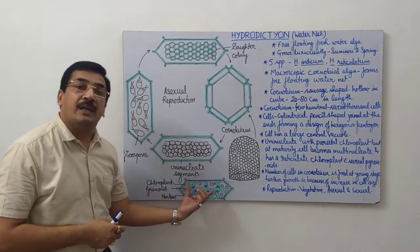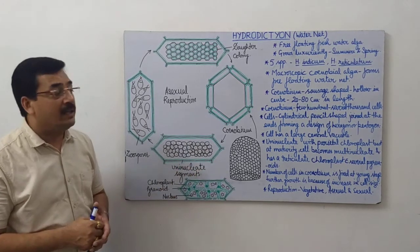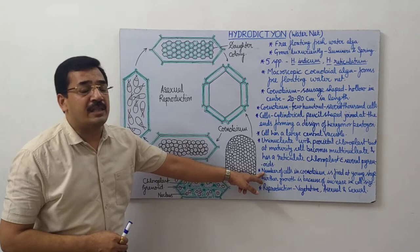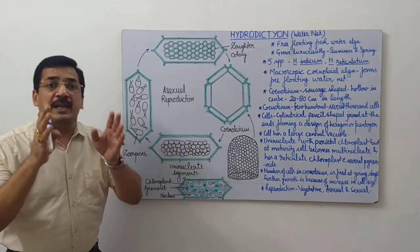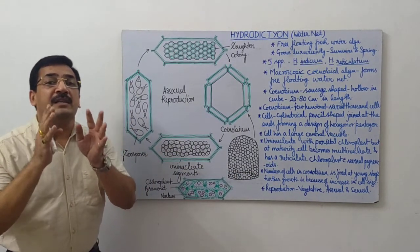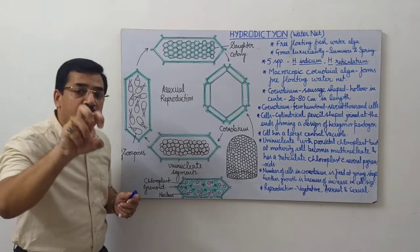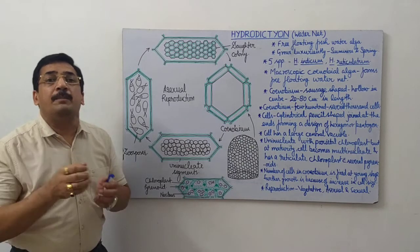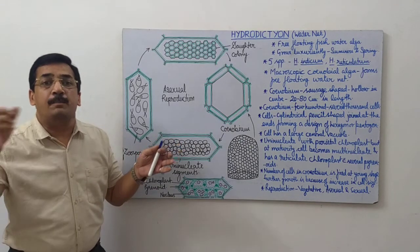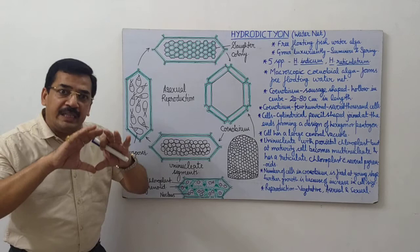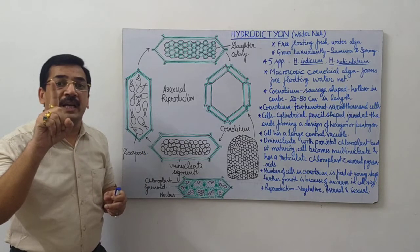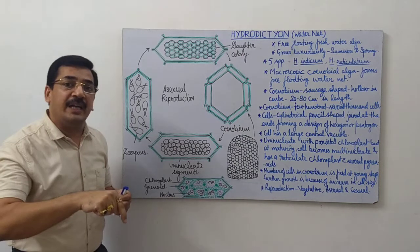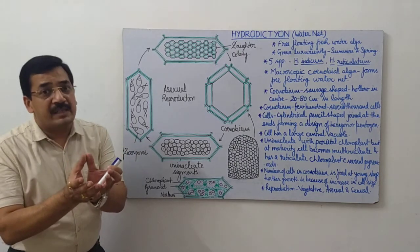As far as number of cells in the coenobium is concerned, the number is determined at the young stage when the colony is smaller in size. When this colony grows, it becomes larger in size, but it increases only in size. The number of the cells does not change. Number is decided when the colony is in young stage.